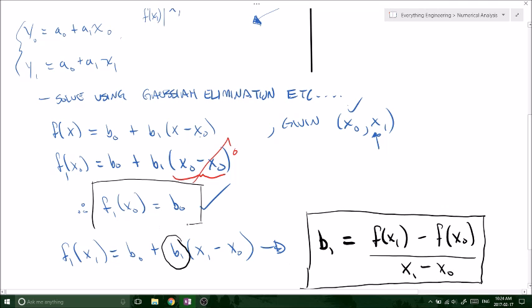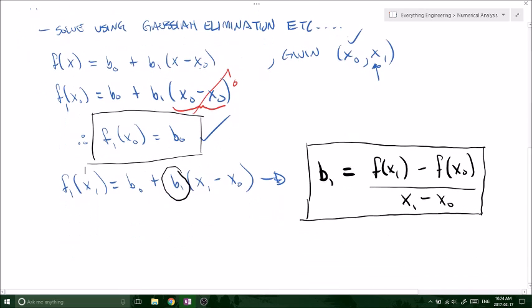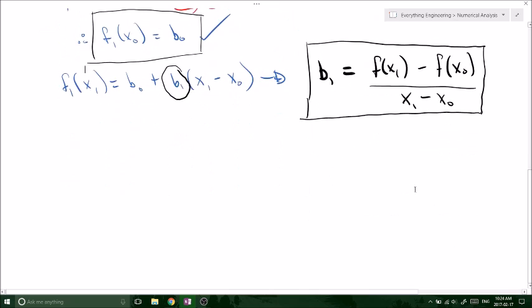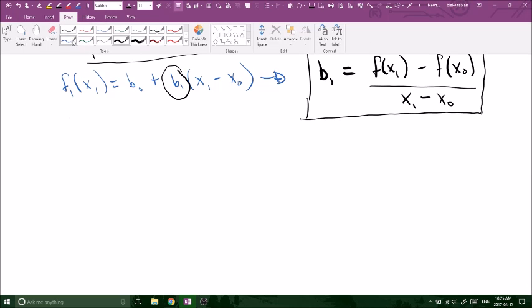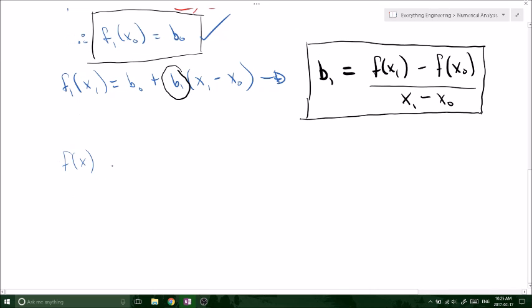These two equations basically just saved us from doing any sort of Gaussian elimination, because now when we go back to write our function of x, remember this was b naught plus b1. We have a b naught, and we also have a b1 value now.